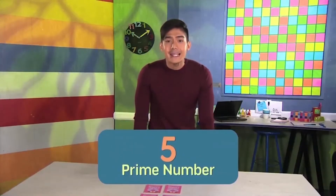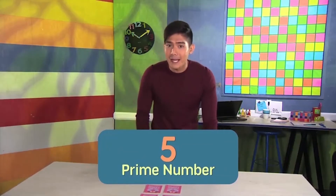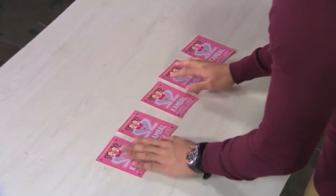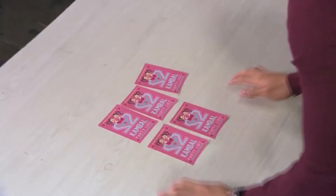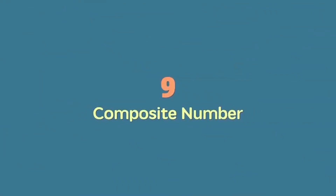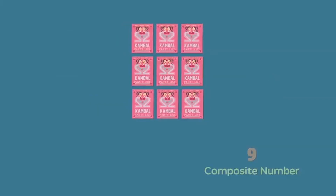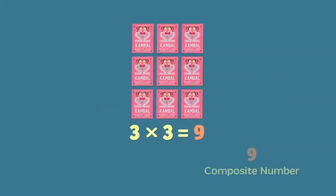Ang 5 naman, na isang prime number, ay may isang paraan lang ng pag-aayos. Kapag sinubukan natin ang ibang paraan ng pag-aayos, siguradong may masosobra. Ganito rin sa number 9, na isang composite number — pwede itong ayusin na isang linya, o kaya tatlong linya — walang labis, walang kulang, di ba?